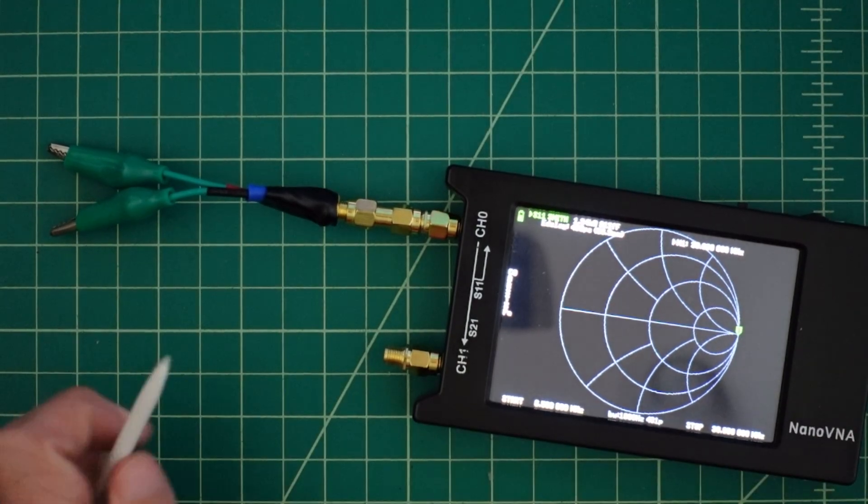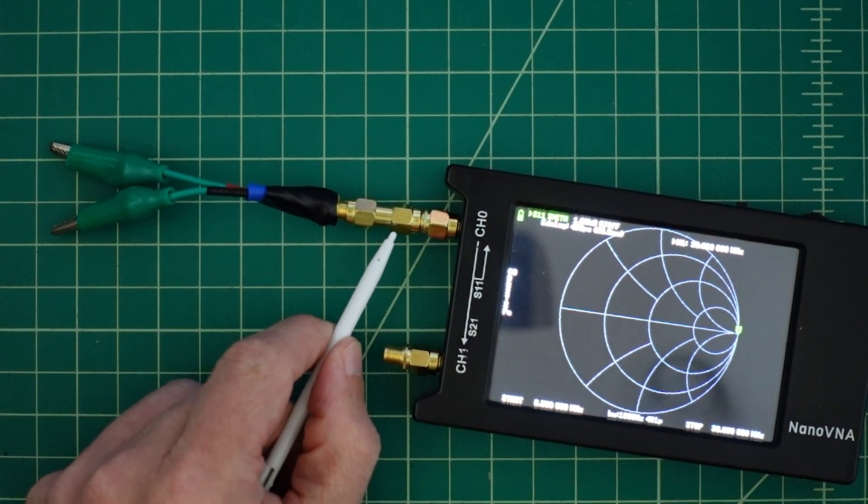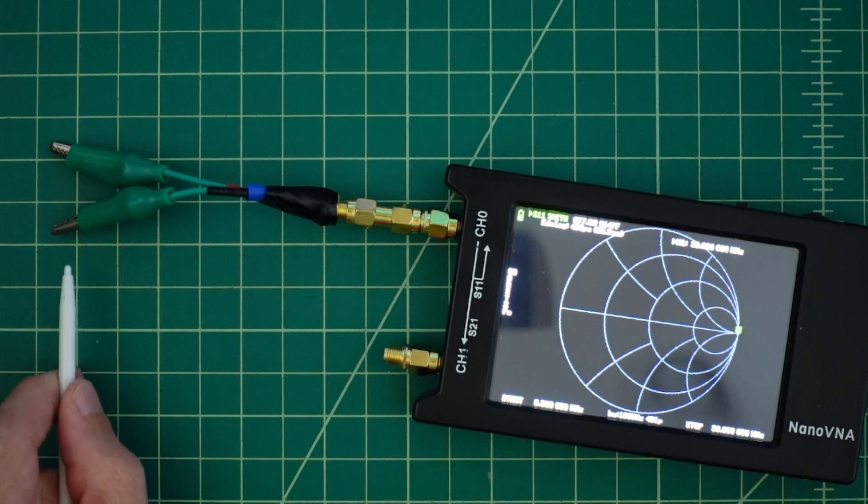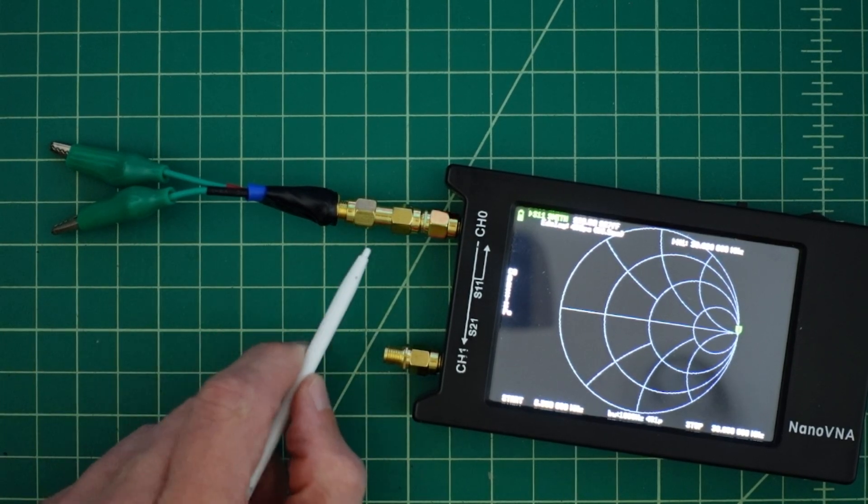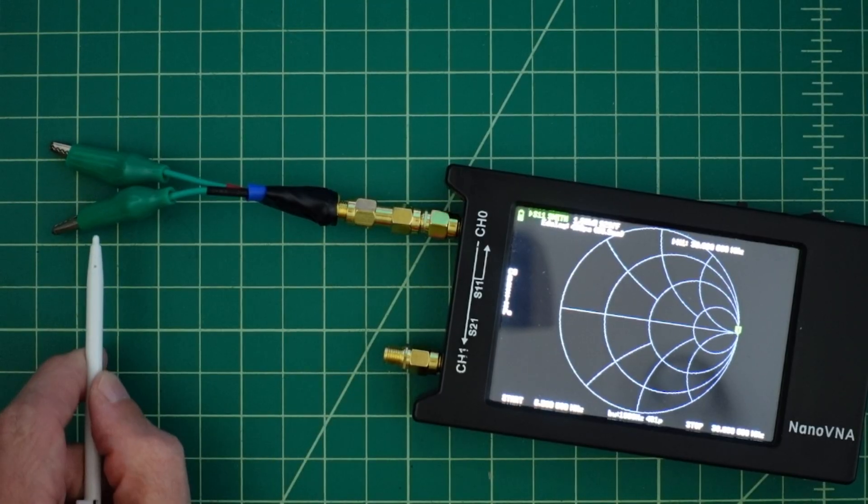Now when we take a look at that, what that does is it moves our reference plane from the end of the connector to the end of the alligator probes. It does not account for any characteristic impedance of the probe itself.